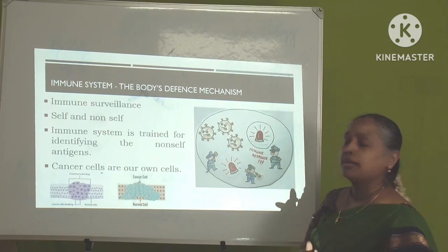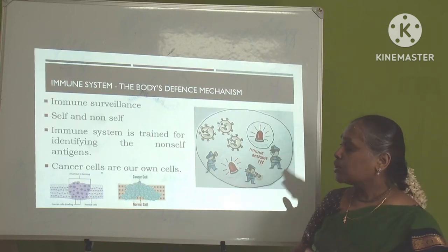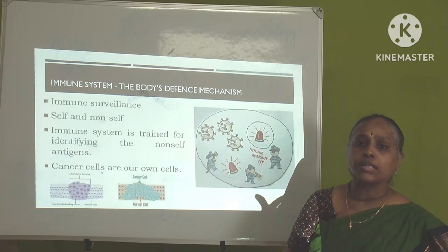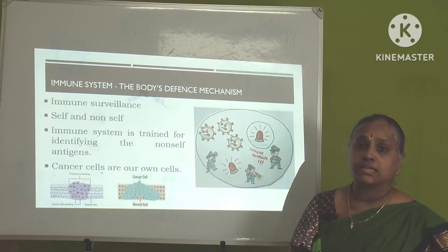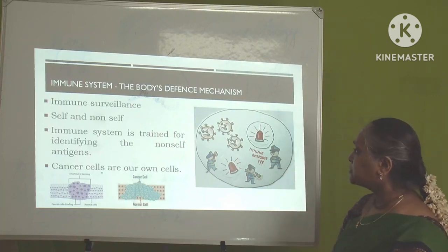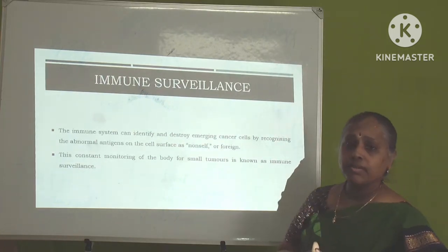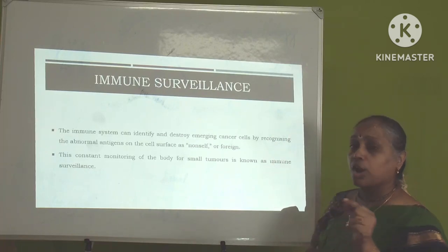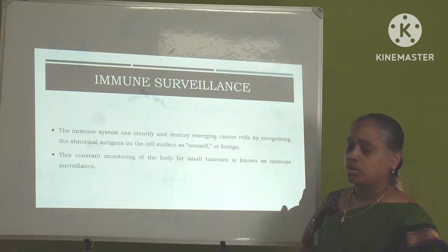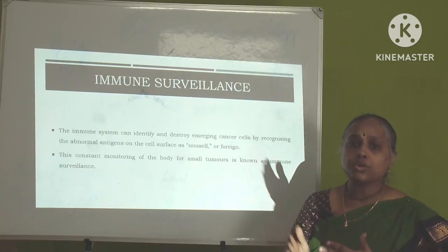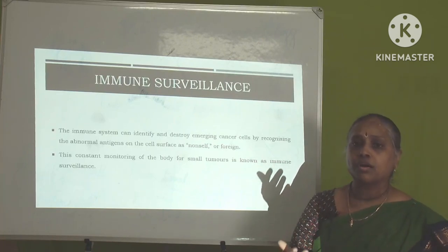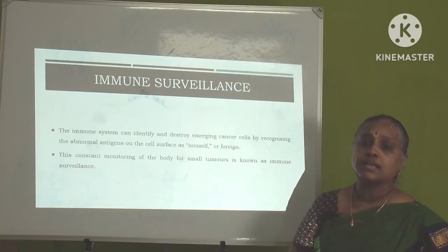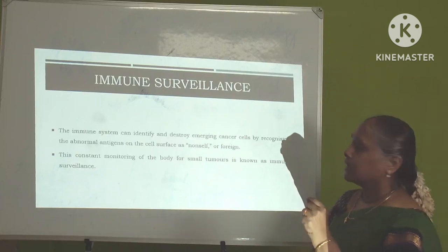Our immune system is trained for identifying non-self antigens. Here the scenario is that cancer cells are not foreign cells — they have not come from outside the body like bacteria or virus. A normal cell has been transformed into a cancer cell. Immune surveillance identifies emerging cancer cells by recognizing abnormal antigens on the cell surface. When a normal cell transforms into a cancer cell, it starts expressing new proteins or mutated proteins on its surface, and our immune system identifies these antigens as non-self material and starts attacking the cancer cells.